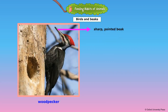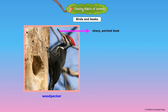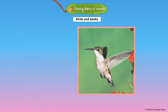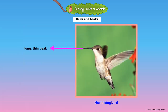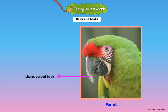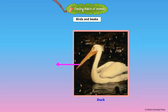Woodpeckers have sharp pointed beaks that help to cut and bore into wood and search for insects. Grain-eating birds such as pigeons have strong straight beaks. Sunbirds and hummingbirds have long thin beaks to reach inside flowers so that they can suck the juice or nectar. Parrots have sharp curved beaks to crack open nuts and seeds. Ducks and pelicans have broad bills to scoop up mud, water, and fish.